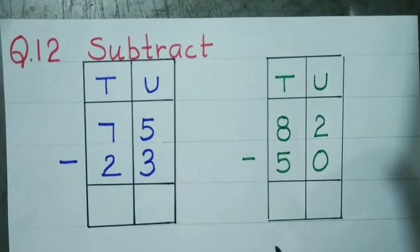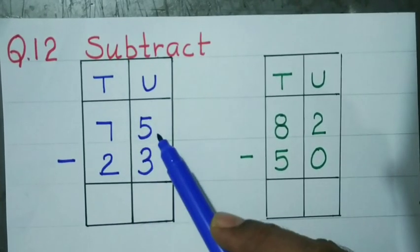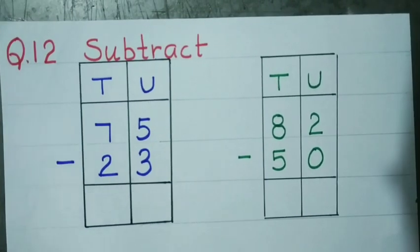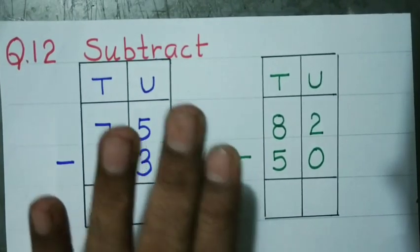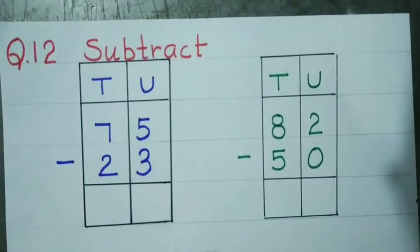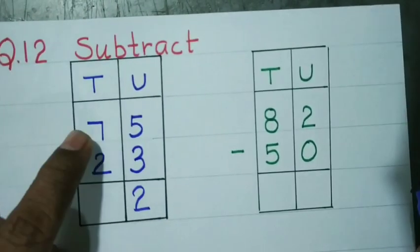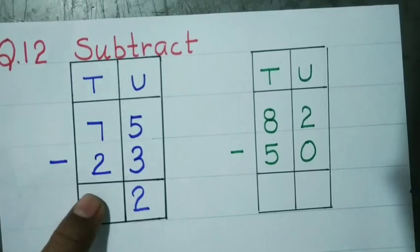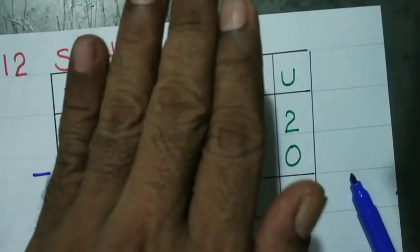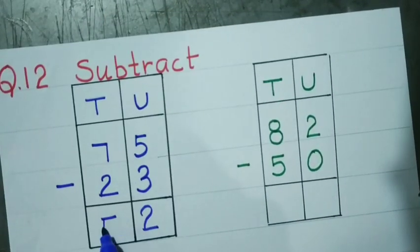Subtract — means minus. Units and tens. Begin from the units place: 5 minus 3 — from 5 remove 3: 1, 2, 3 removed; 2 left. Tens: 7 tens minus 2 tens — from 7 tens remove 2: 1, 2 removed; 5 tens left. So 52 is the answer.